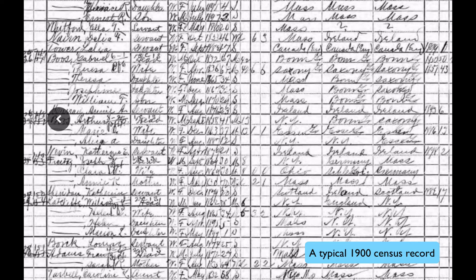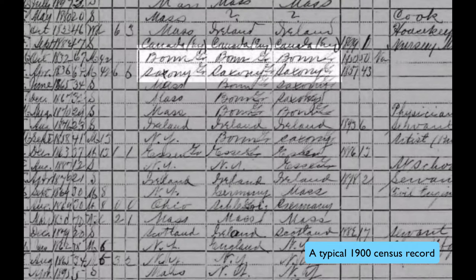Here is an example of the 1900 census. These three columns — the birthplace of the person in the census, the birthplace of his father, and the birthplace of his mother — can sometimes tell the town, as it does here with Bonn. Usually, however, it just says Germany, or the province, such as Saxony, which can be very important.